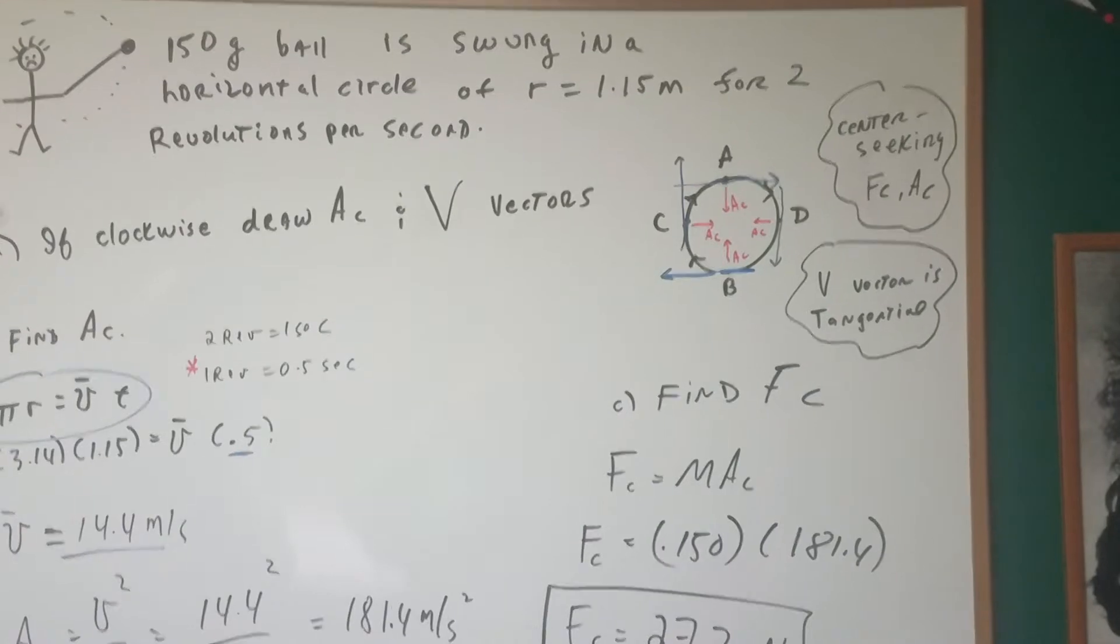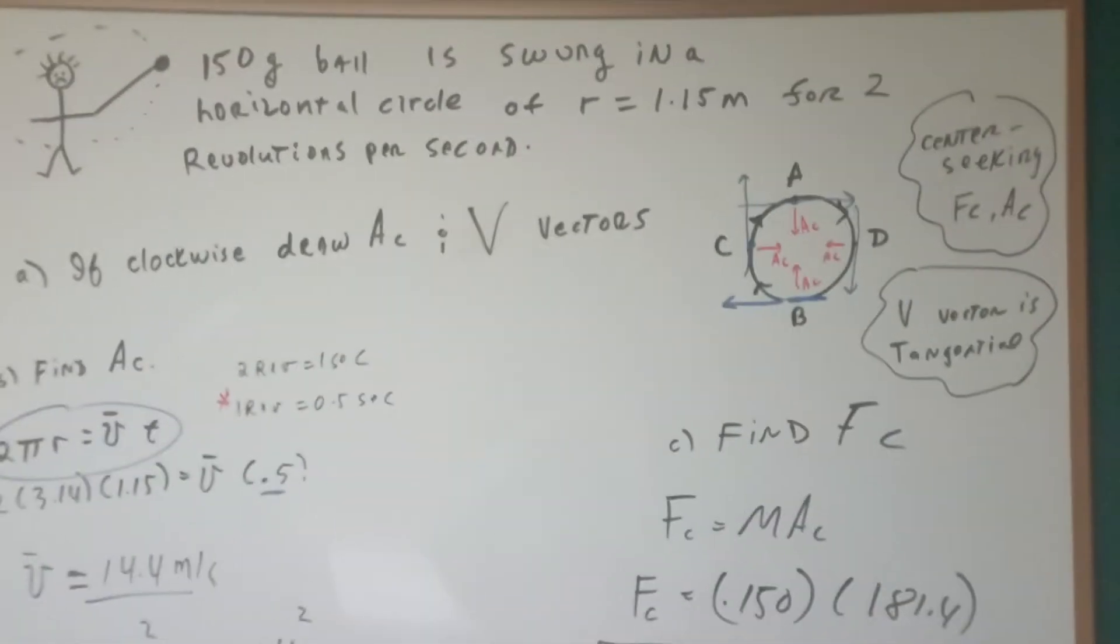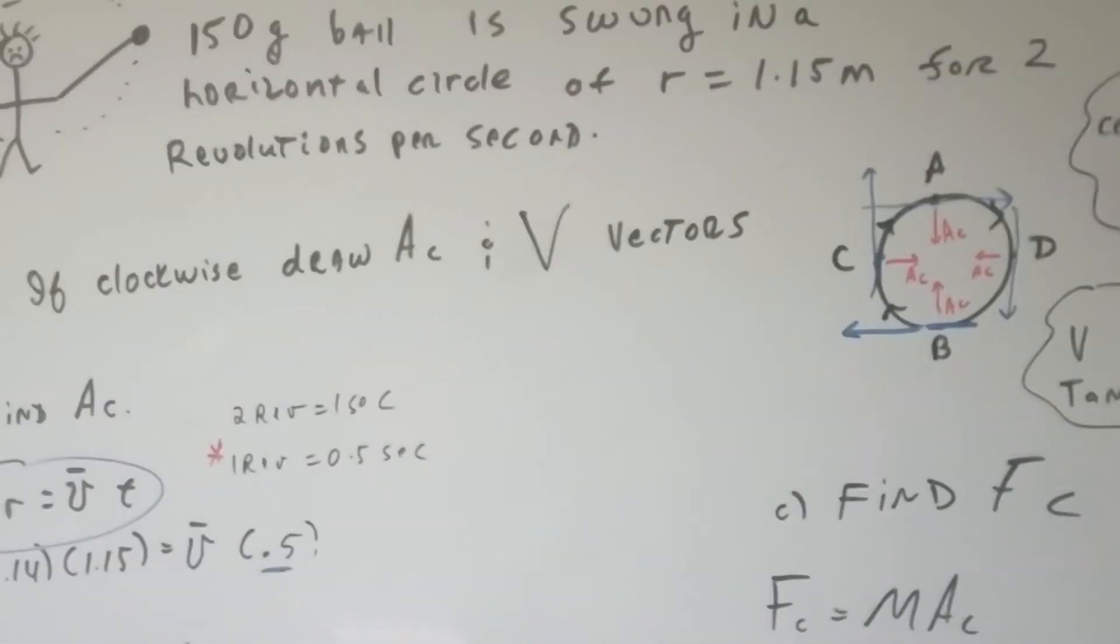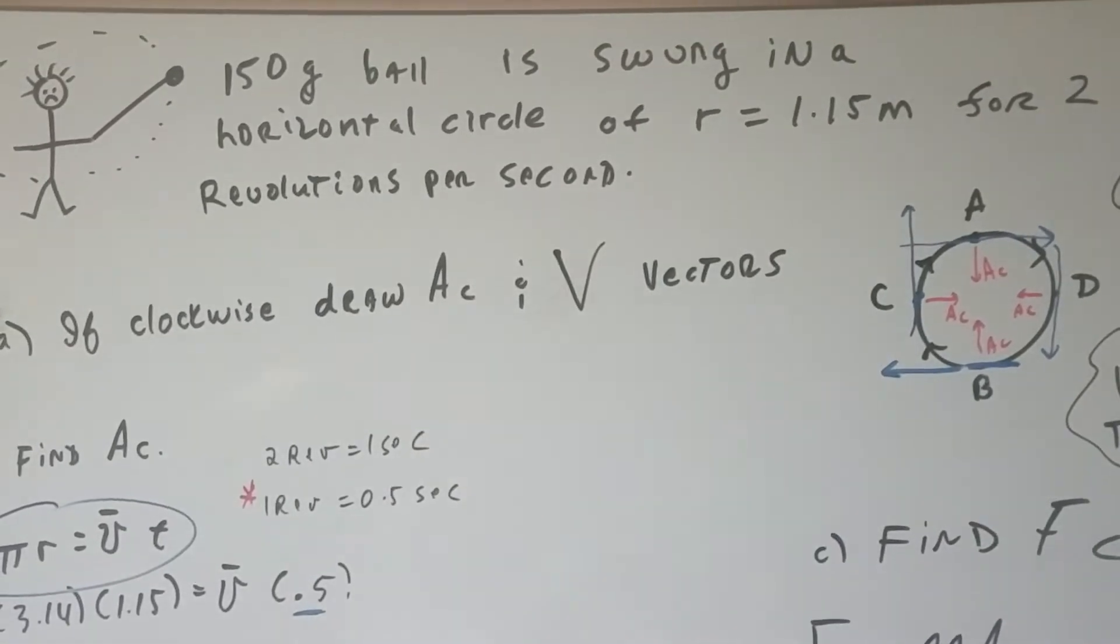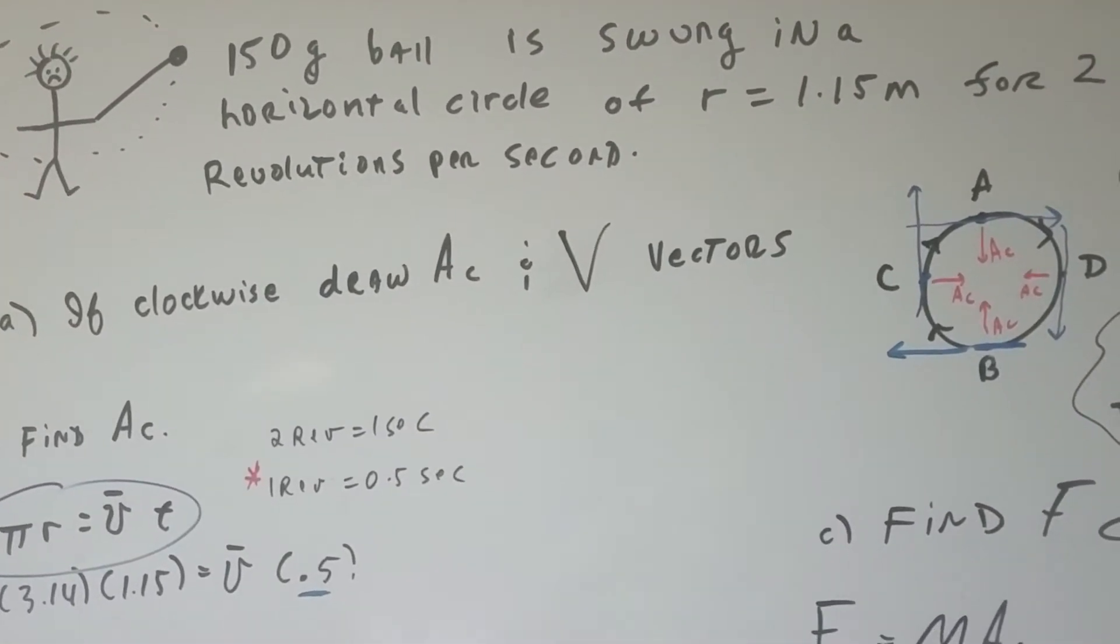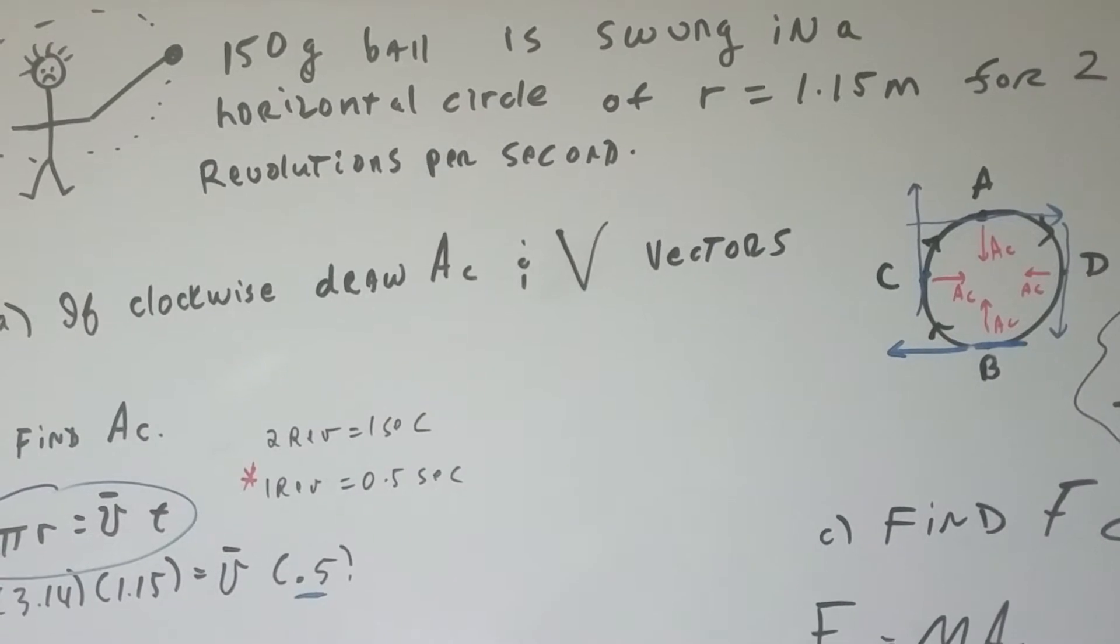In this question, we have a 150 gram ball that is swung in a horizontal circle at radius 1.15 meters for two revolutions per second.